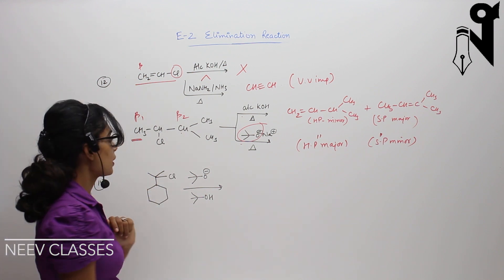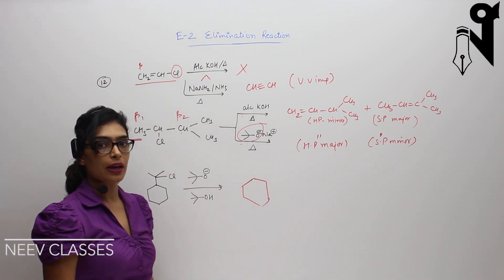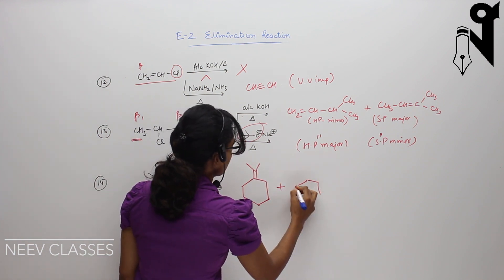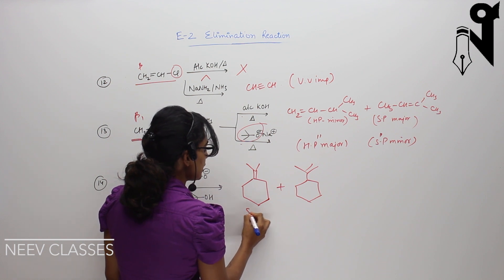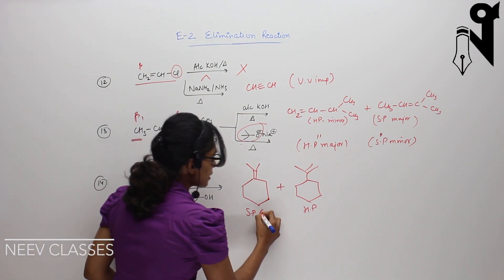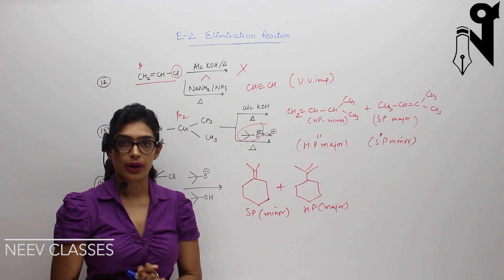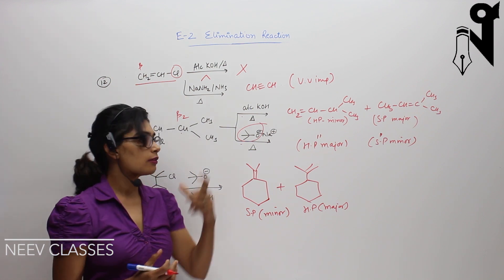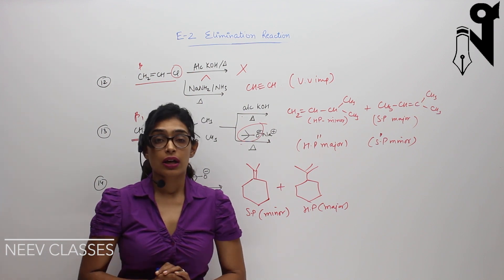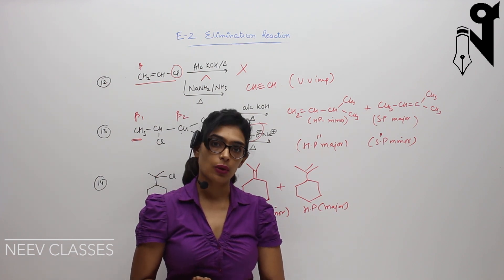For the fourteenth question, it is a very similar situation. Two products are possible — the Zaitsev product and the Hoffman product. Because a big bulky base is used again, Zaitsev is minor and Hoffman is major. The key takeaway is to check carefully which kind of base is present and accordingly determine which product is major and which is minor. Next, we need to understand how stereochemistry changes with slight differences in the molecule.